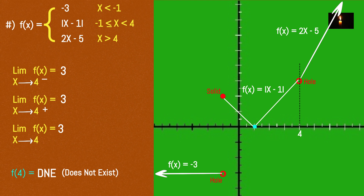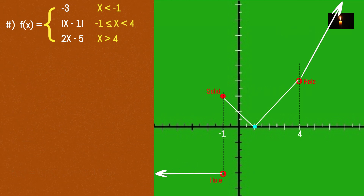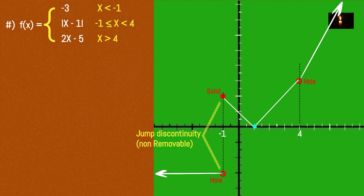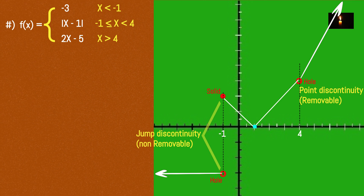At x = -1, this is a jump discontinuity. At x = 4, this is a point discontinuity — also called removable discontinuity. A point discontinuity can be removed.